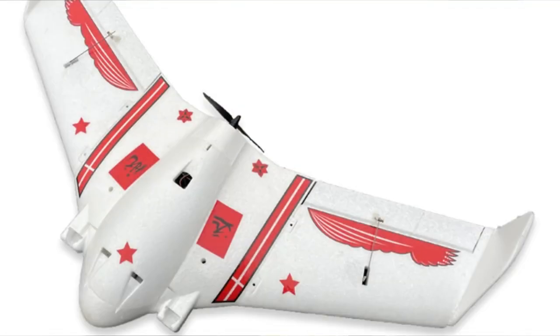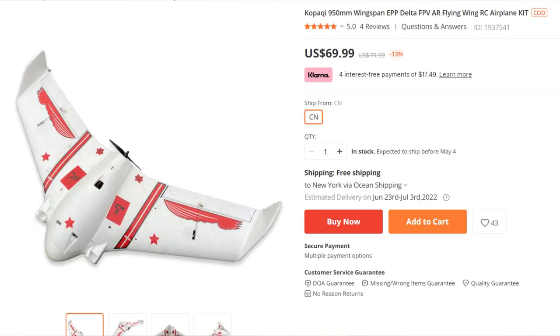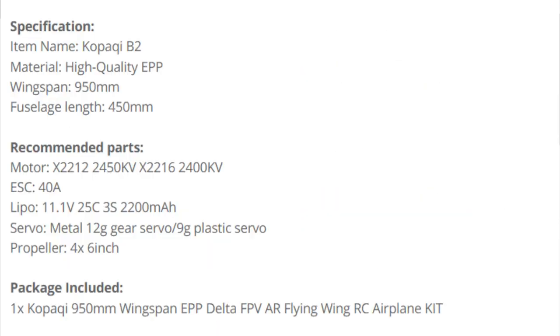Hey guys, welcome back to EverRC. In this episode we have a Kopachi 950mm flying wing provided by Banggood. At the moment the price is about 70 US dollars shipped to the US, pretty reasonable. It's an EPP material and it looks pretty good too.